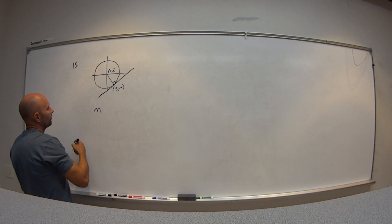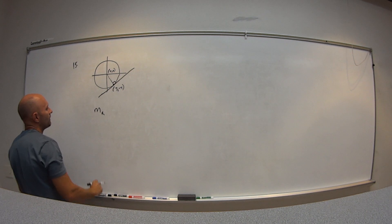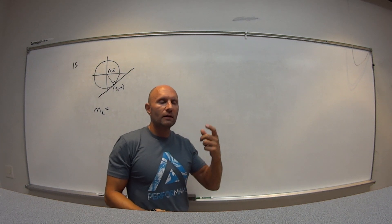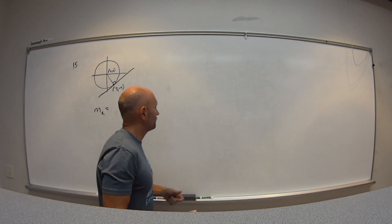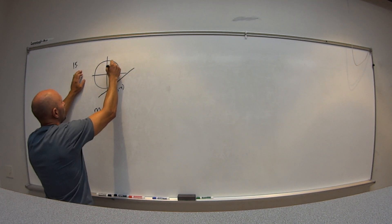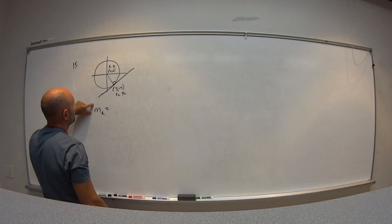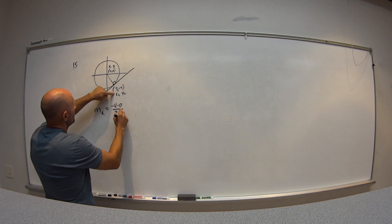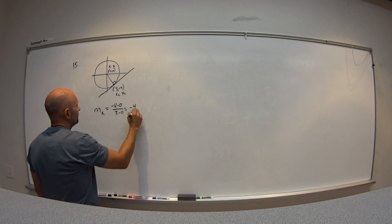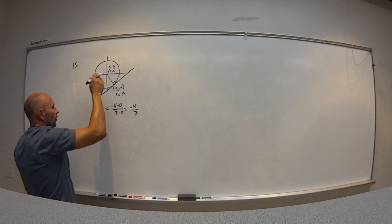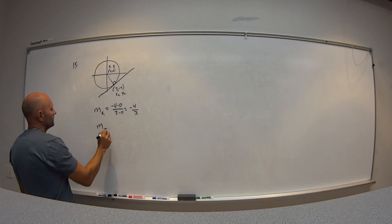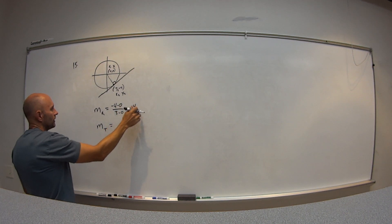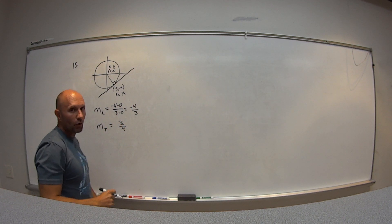The slope of the radius, m_r, uses the two points origin (0, 0) and (3, negative 4). Using the slope formula: y2 minus y1 over x2 minus x1, I get negative 4 minus 0 over 3 minus 0, which equals negative 4 thirds. The slope of the tangent line is the negative reciprocal: negative becomes positive, and 4 over 3 flips to 3 over 4.